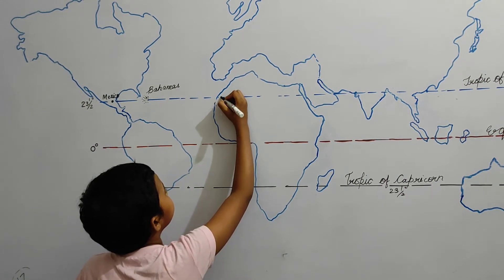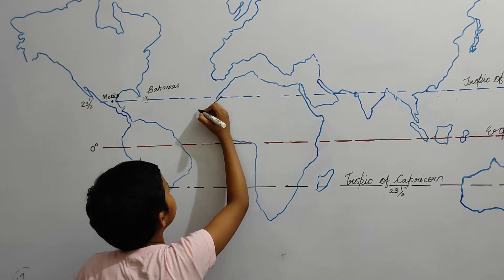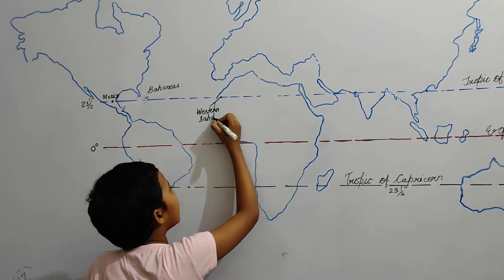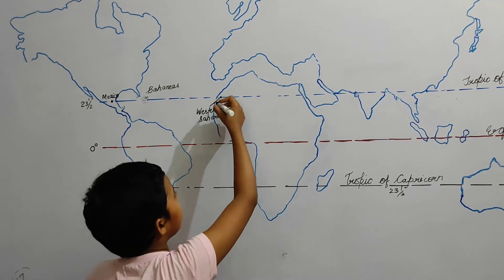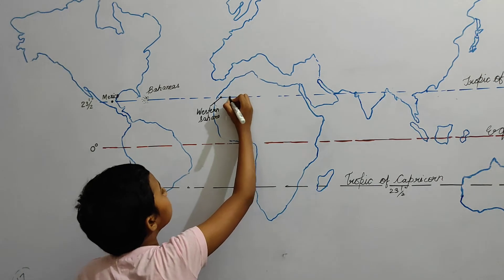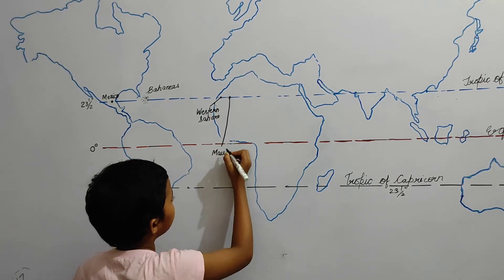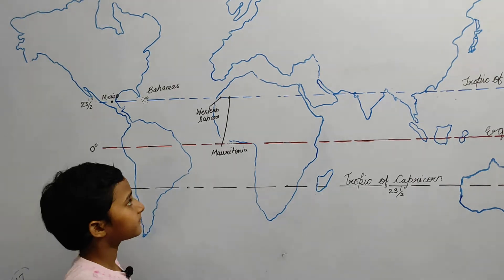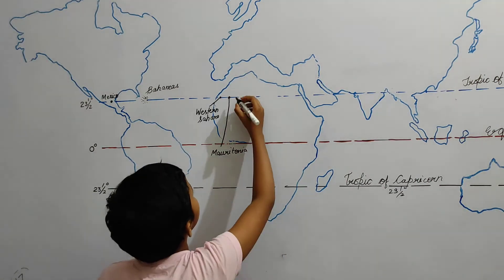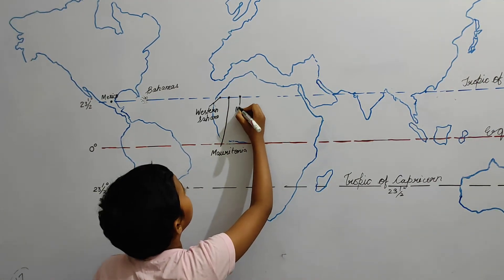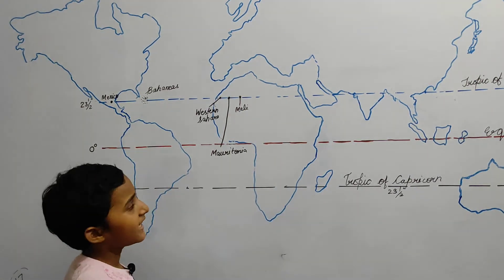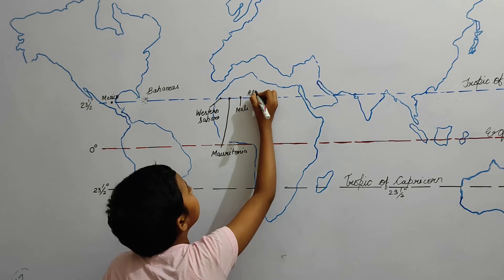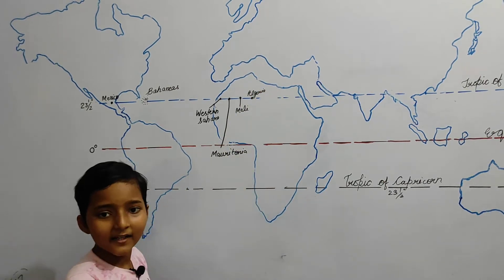In Africa, here is one country that is Western Sahara. And the next country is Mauritania. And the next country is Mali. And after Mali there is one country that is Algeria — you can see Algeria.